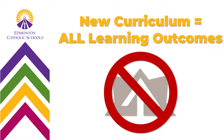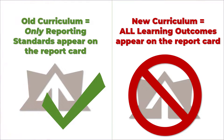In the new Alberta curriculum, learner outcomes are much broader, and therefore rather than nearly 100 specific outcomes as we see in the old curriculum, the new curriculum has approximately 10 learner outcomes per subject per grade. There are no reporting standards for the new curriculum. This means that every outcome from new curriculum must appear on the final report card. So to recap: only reporting standards from the old curriculum will appear on the report card, just as in previous years, and all outcomes from the new curriculum will appear on the report card.